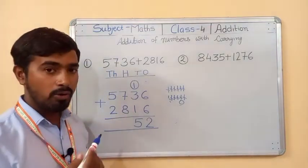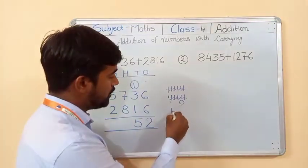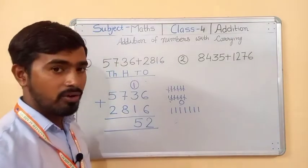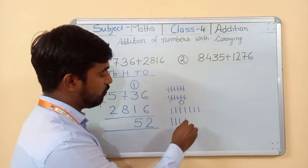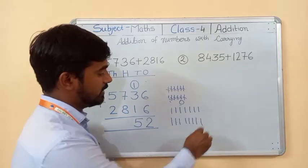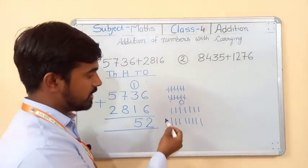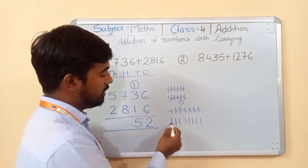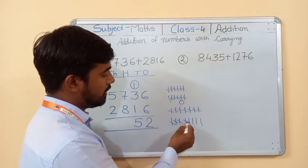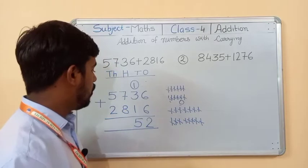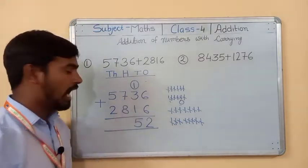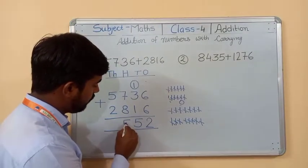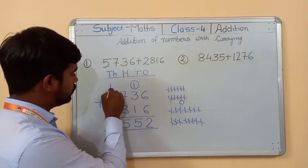Seven plus eight. How to add this number? Draw seven lines, then draw eight more lines, add them all together — that gives fifteen. So seven plus eight equals fifteen. Write five here; carry goes to the next number.